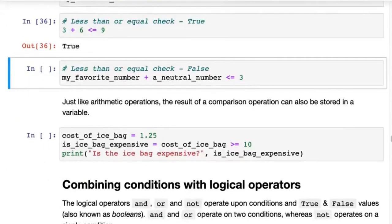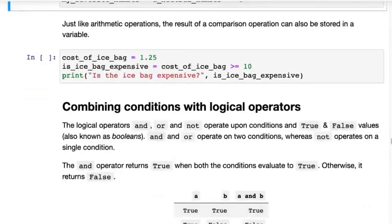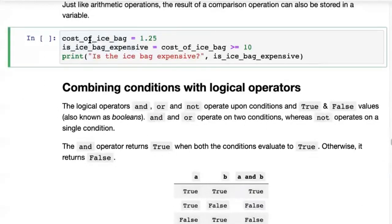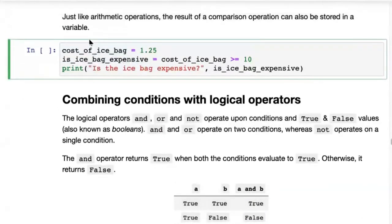And similarly you have less than or equal to as well. That's comparison operators, and you can experiment with this notebook. Just like arithmetic operations, the result of a comparison can also be stored in a variable.